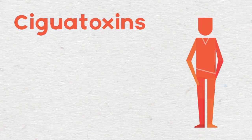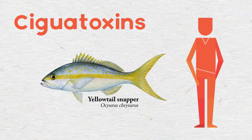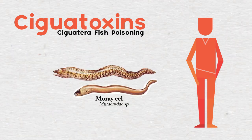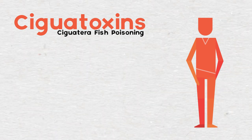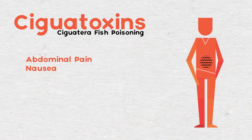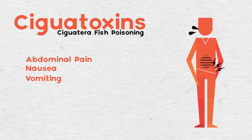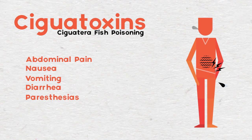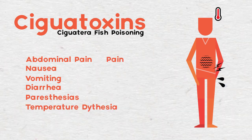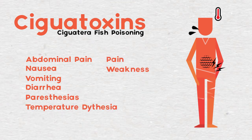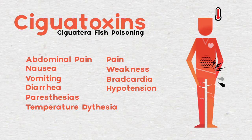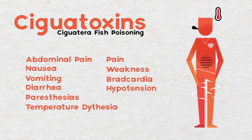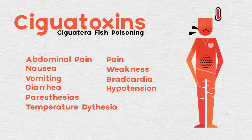Ciguatoxins are transmitted through the consumption of contaminated reef fish, and can lead to ciguatera fish poisoning. This will result in abdominal pain, nausea, vomiting, diarrhea, burning sensation, abnormal temperature, pain, weakness, slowed heartbeat, and hypertension. Ciguatera fish poisoning can lead to long-term chronic depression as well, which in some cases could last for years.